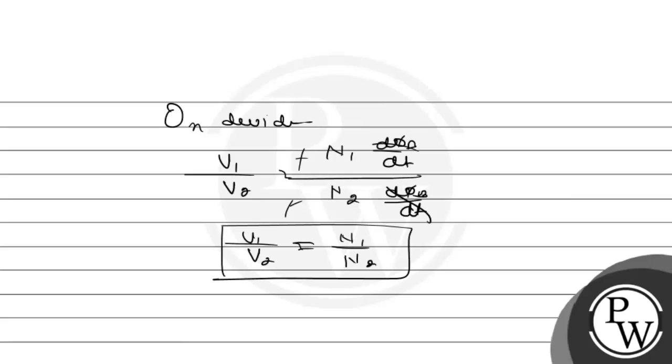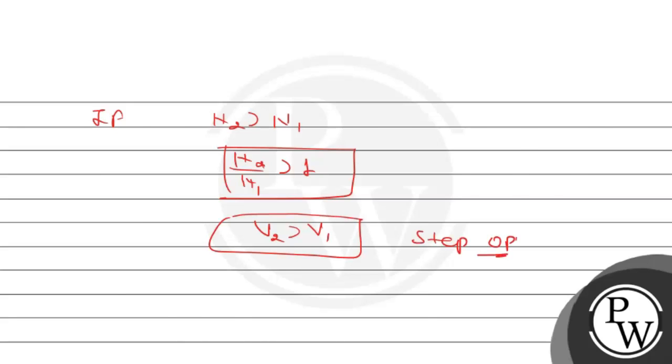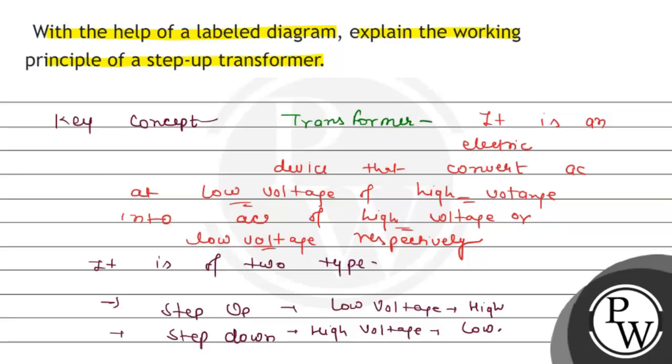If N2 is greater than N1, then N2 upon N1 will be greater than 1. Automatically V2 will be greater than V1, which is the condition of step up transformer. I hope you have understood well, best of luck.